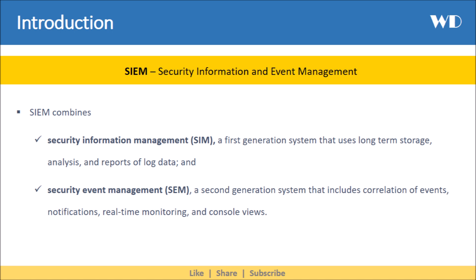SIEM combines two models: Security Information Management (SIM), a first-generation system that uses long-term storage, analysis, and reports of log data; and Security Event Management (SEM), a second-generation system that includes correlation of events, notifications, real-time monitoring, and console views.